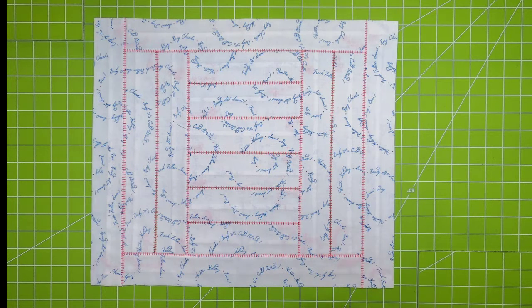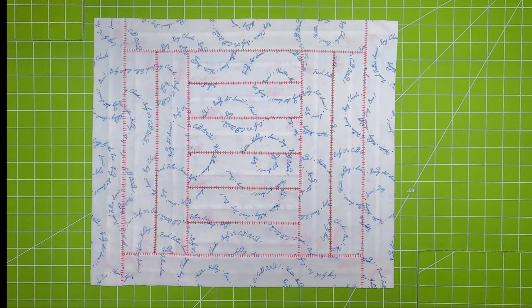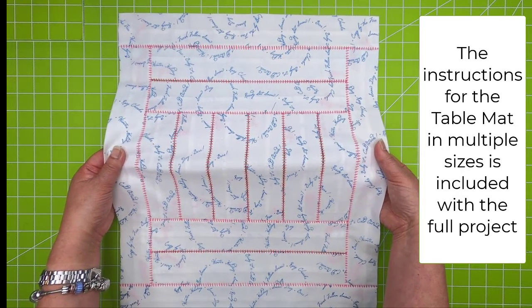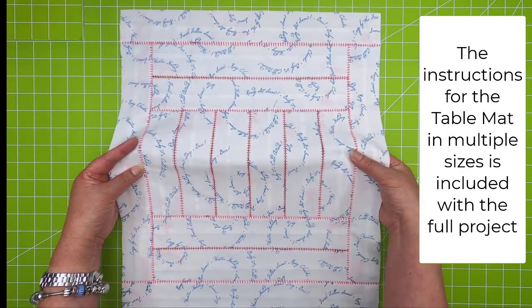I'm calling this a table mat and really this month is all about a technique. So the technique is using the two thread flat lock stitch in two different ways.